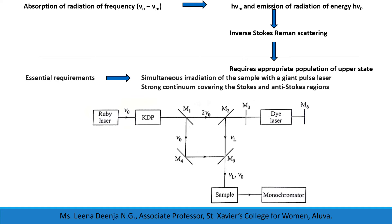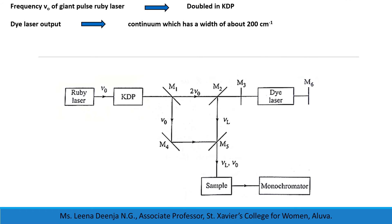The figure shows one of the experimental arrangements for the observation of inverse Raman scattering. The frequency ν₀ of the giant pulse ruby laser is doubled in a KDP crystal. The second harmonic — that is, the doubled frequency 2ν₀ — is separated from the original ν₀ by mirror M1.